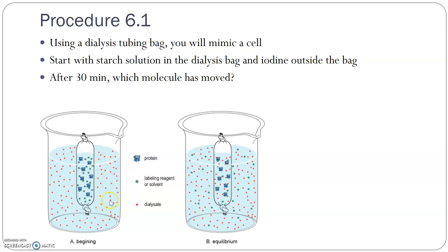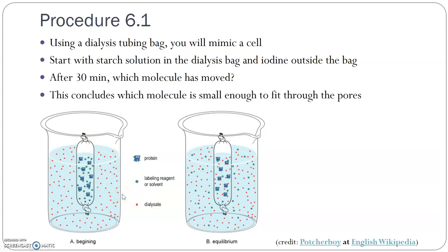Iodine is going to start outside and starch is going to start inside. Remember from labs of past, when starch and iodine meet, it turns purple or black, depending on how much starch and how much iodine you are using. What we're looking for in this experiment is where the color changes to purple — does the inside of the bag turn purple, does the outside in the beaker turn purple, or does everything turn purple? This will help you decide which molecules were small enough to fit through the bag, and you can conclude which molecule is actually small enough to fit through the pores.